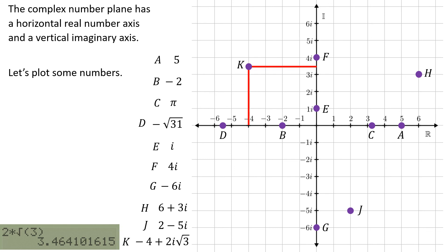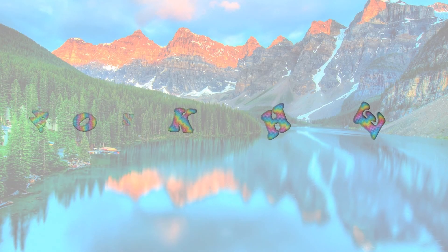And then 2i root 3, again the calculator says about 3 and a half, so I want to line up with about 3.5i on the imaginary number line. And then I've got it except one more thing, label it as K. Please remember to label your dots, otherwise it's going to be impossible to check your answer.